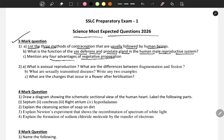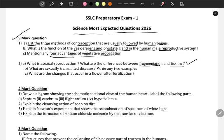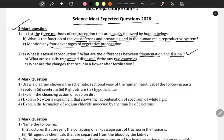These questions yesterday we have discussed it right. You people need to practice these questions. Next, what is asexual reproduction? Difference between fragmentation and fission. Next, what are sexually transmitted diseases? Write any two examples. What are the changes that occur in a flower after fertilization?